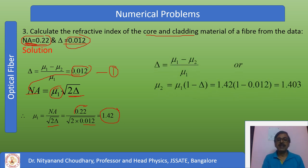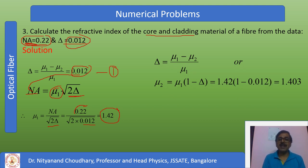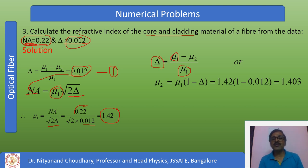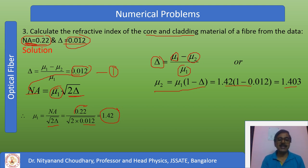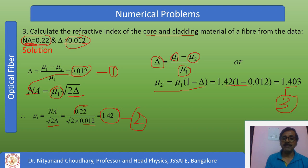Now calculate the refractive index of the cladding. From delta = (mu1 - mu2) / mu1, mu1 is already calculated as 1.42, and delta = 0.12 is given. Rearranging and substituting these values, we get mu2 = 1.403. So the refractive index of the core is 1.42 and cladding is 1.403, confirming that the core refractive index is higher than the cladding.